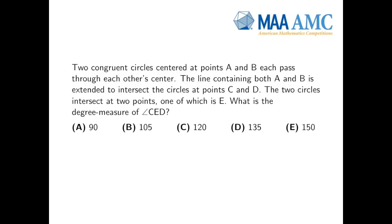As always, let's first start reading the problem carefully. The problem says the following: Two congruent circles centered at points A and B each pass through each other's center. The line containing both A and B is extended to intersect the circles at points C and D. The two circles intersect at two points, one of which is E. What is the degree measure of the angle C, E, D?